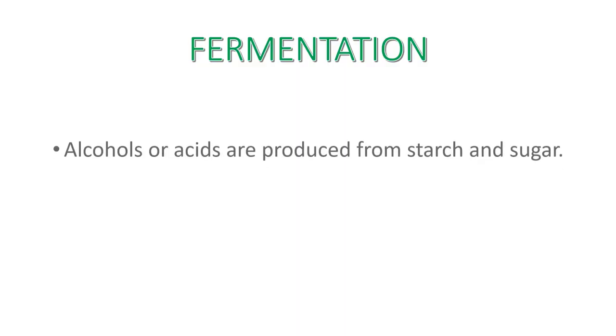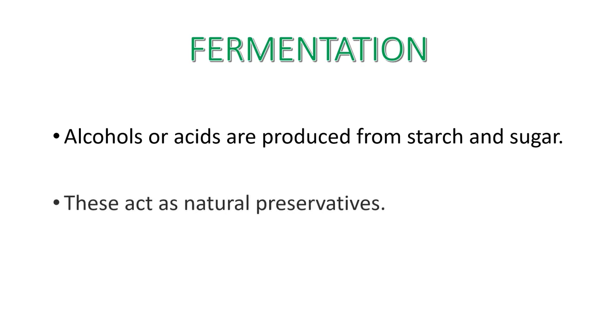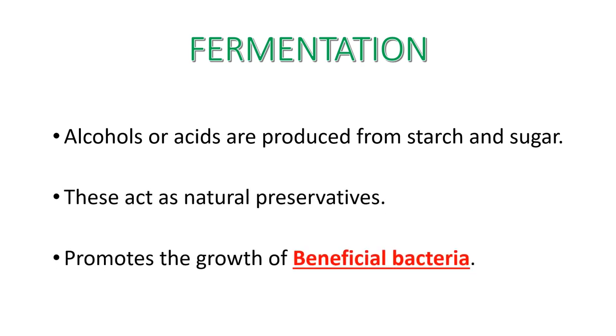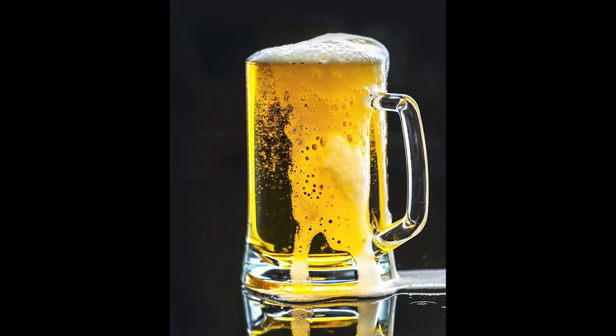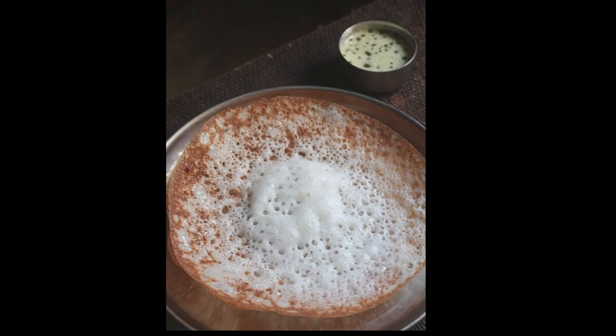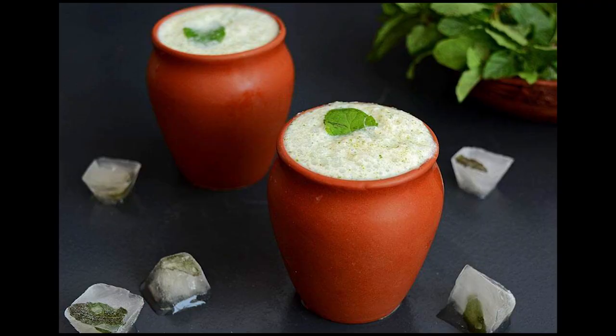The second category of Amla Rasa Dravyas are those which are made sour, in other words which are fermented. By fermentation, alcohol or acids produced from starch and sugar act as natural preservatives. Fermentation also promotes the growth of beneficial bacteria. Common examples are bread, cheese, alcohol, ketchup, soy sauce, dosa, idli, appam, dhoklas, salt pickles and our very own Takra or buttermilk. Do remember that a majority of these are not solely Amla Rasa — most are Amla-Madhura combinations. Takra is Amla-Kashaya in Rasa.